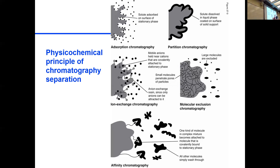In partition chromatography, you have a solid support with a liquid absorbed to it, and your compound of interest dissolves in that liquid. The compound partitions between the two liquid phases — the stationary liquid and the mobile liquid.